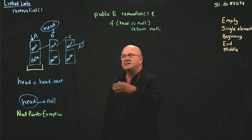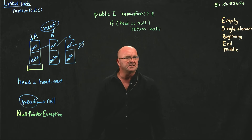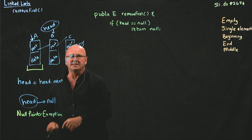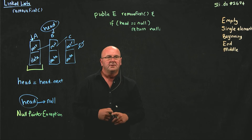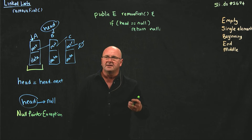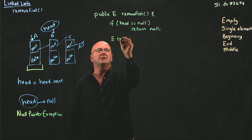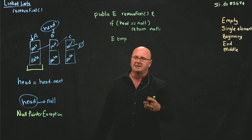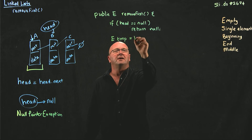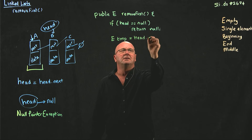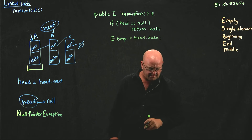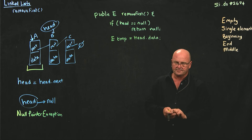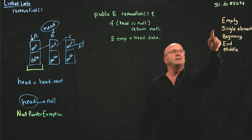Assuming the list isn't empty, there's something there — an element in the first place we want to return. So we need to remember what this data object is, and we just need to store that in a temporary variable that's only going to last for this method. We'll call it temp — you can call it whatever you want — and that's going to be the data object that we're going to return. So we've worried about an empty list.